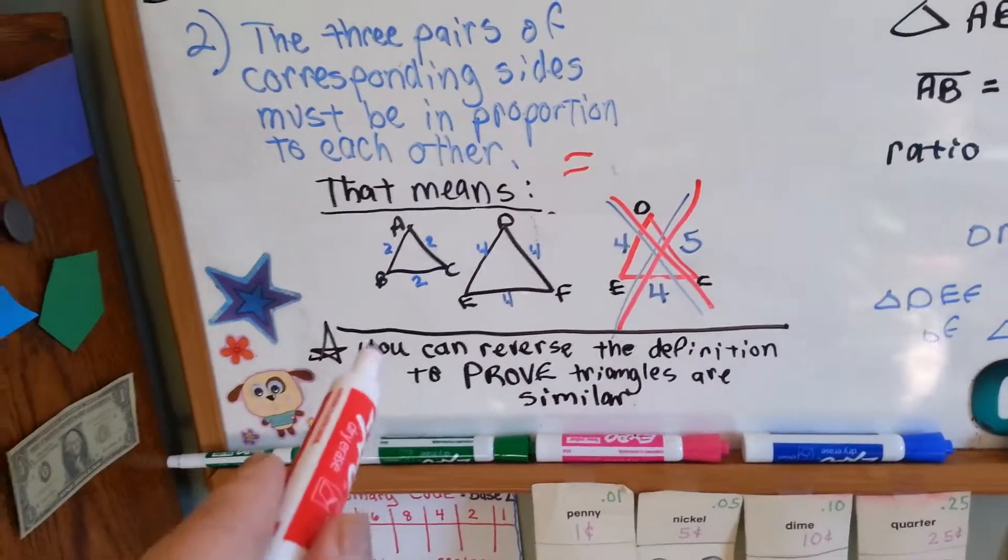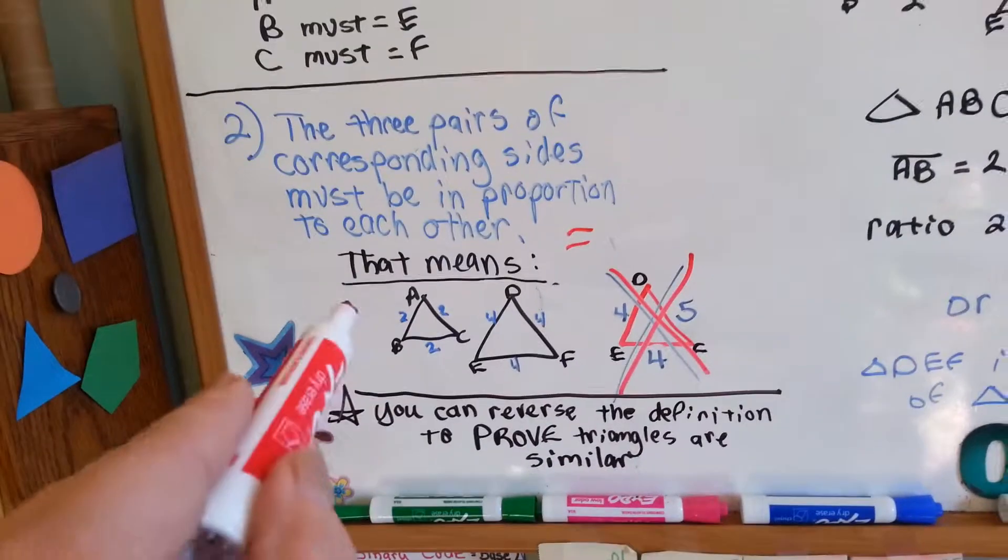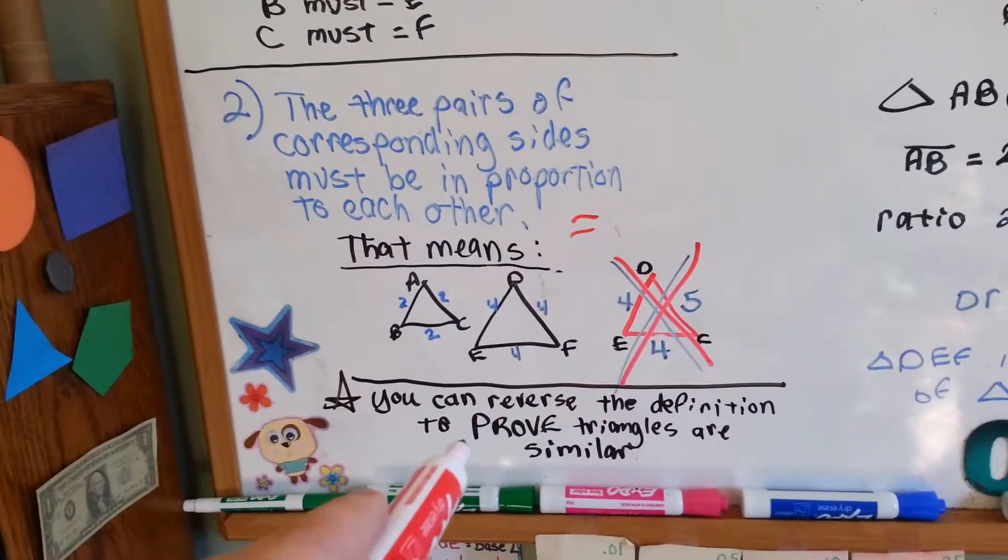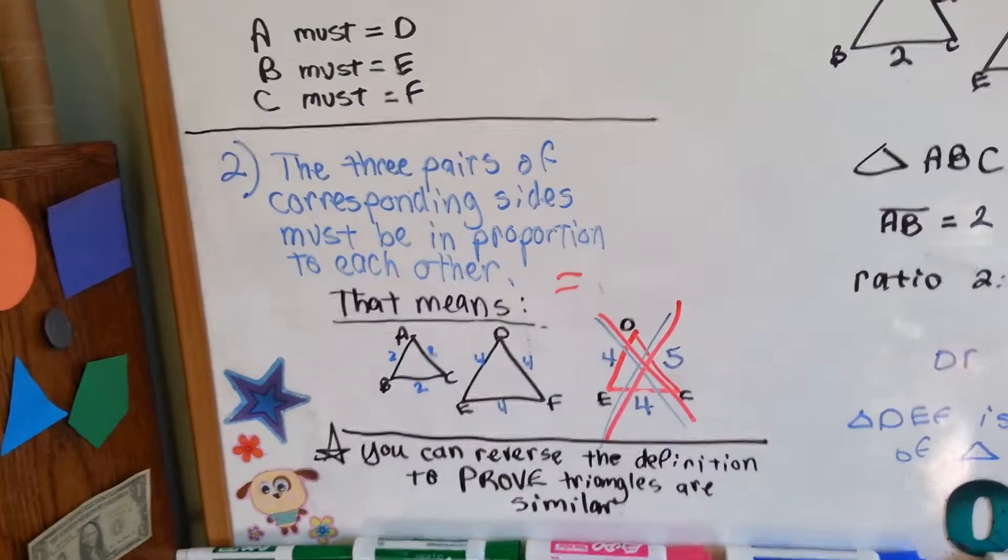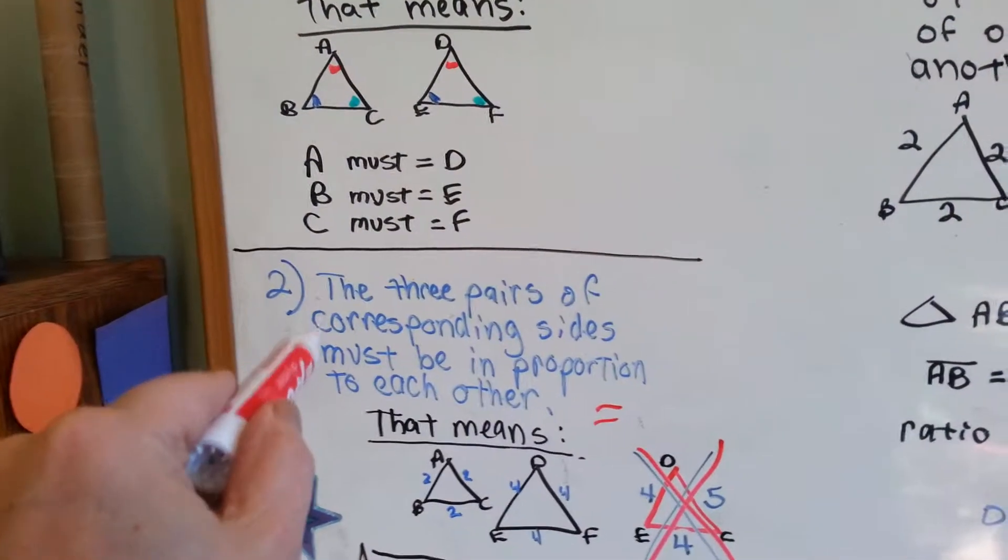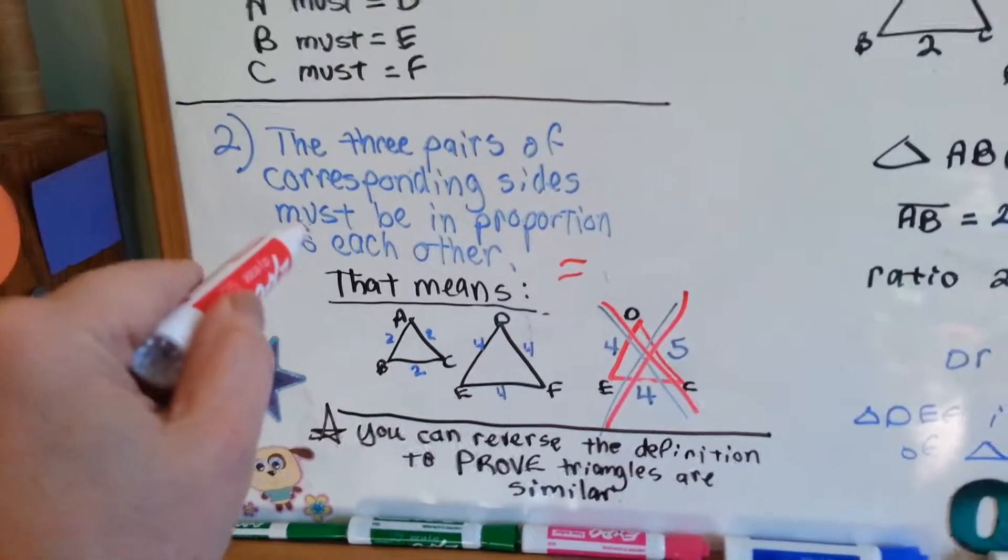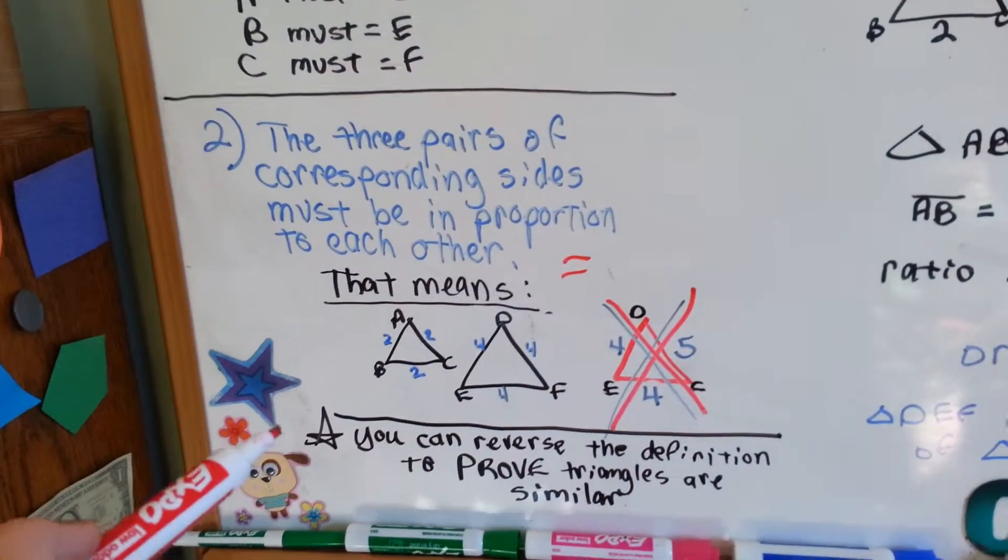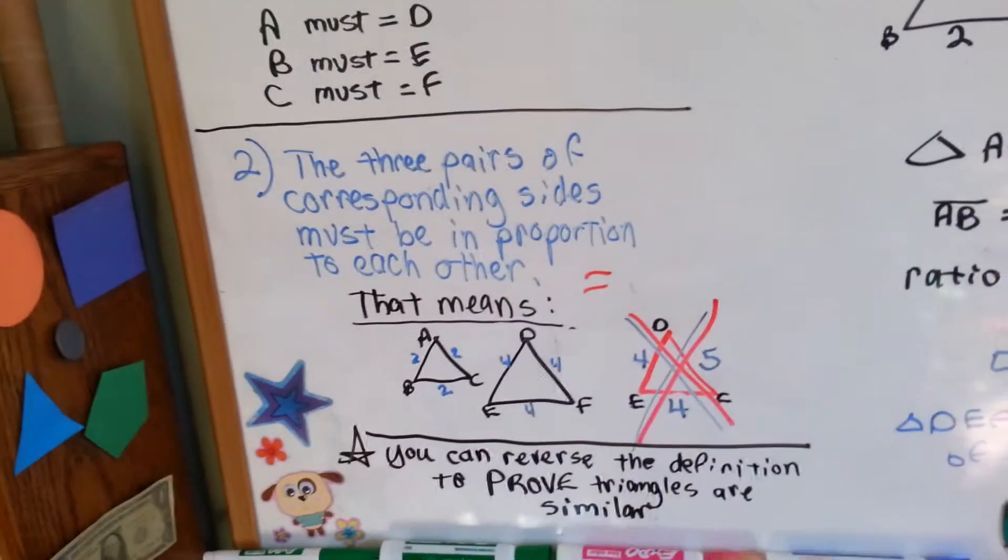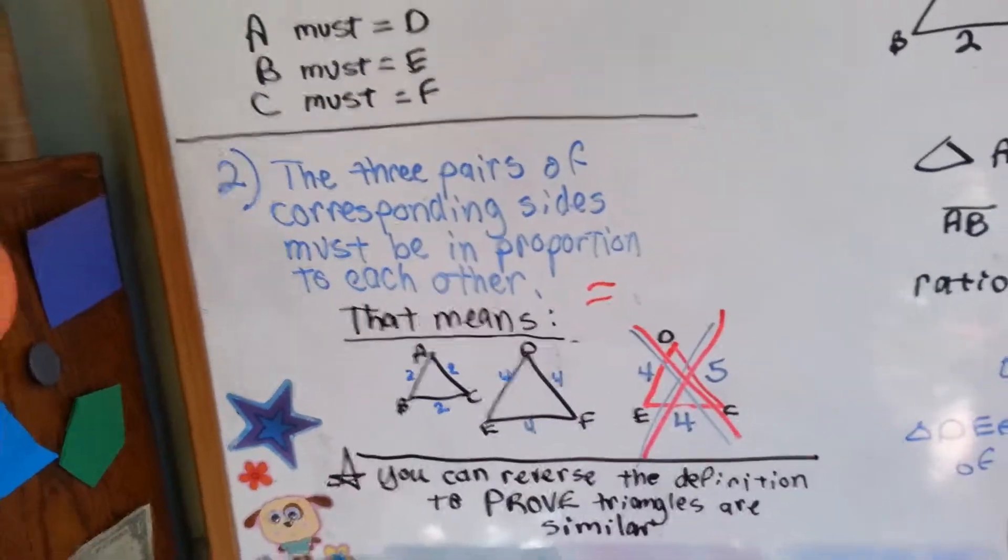So, the other thing is you can reverse the definition of what similar triangles are to prove that they're similar. You can go backwards. So, you can say, you know, because this rule says that the three pairs must be in proportion. So, in a proof, you can say, well, I've got a triangle that has three sides that are in proportion, so they must be similar. So, you go in the other direction.